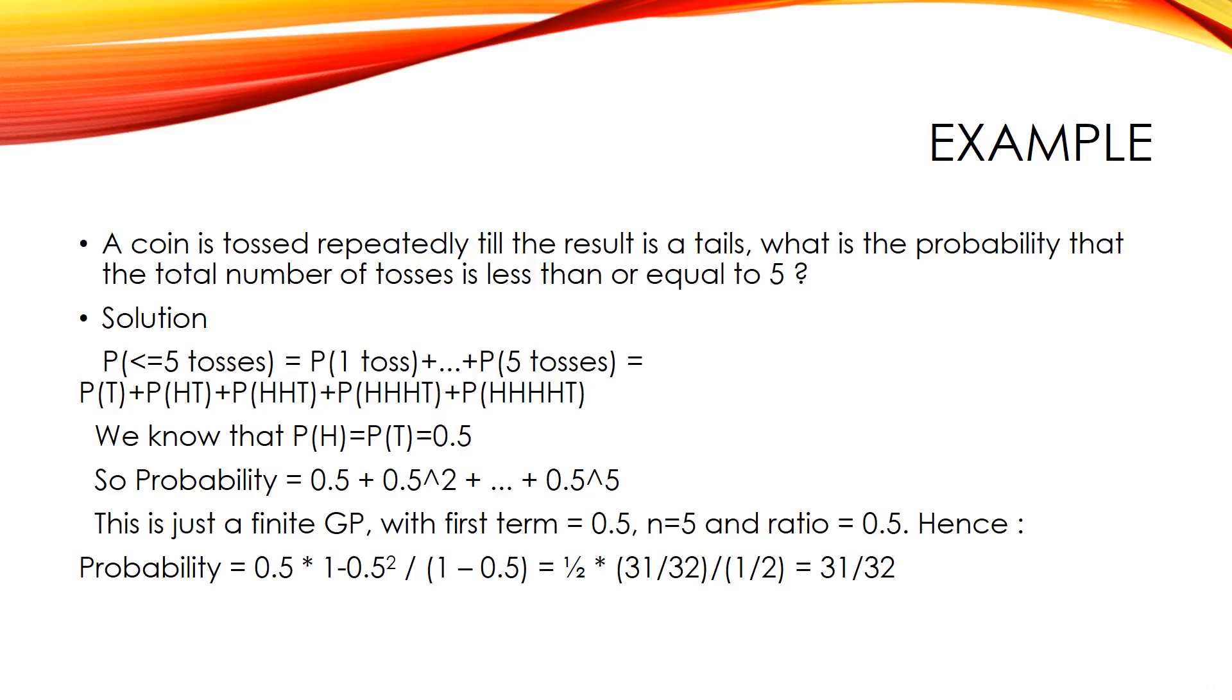We know that P of H equals P of T equals 0.5. So, probability equals 0.5 plus 0.5 square plus so on plus 0.5 to the power 5.